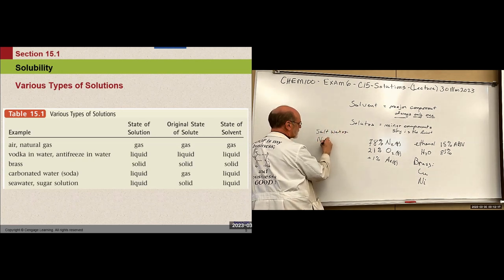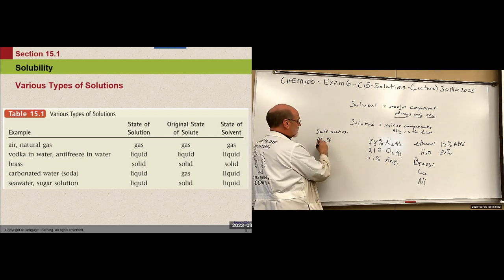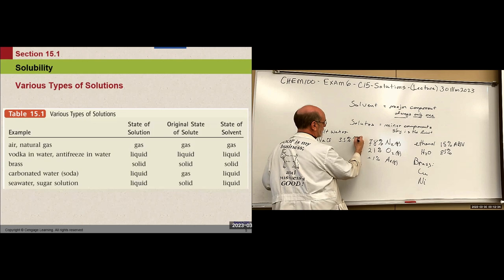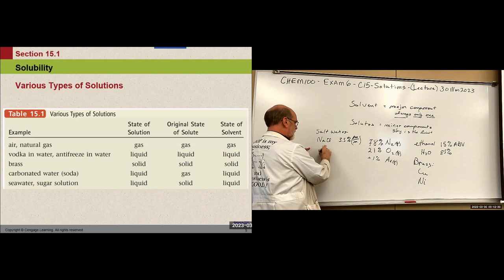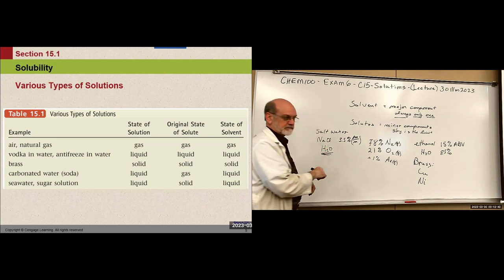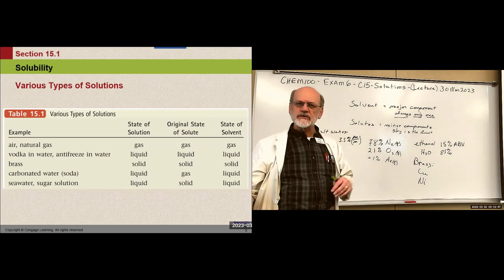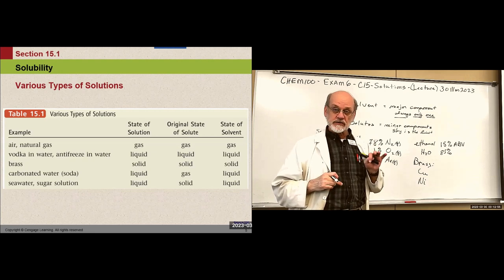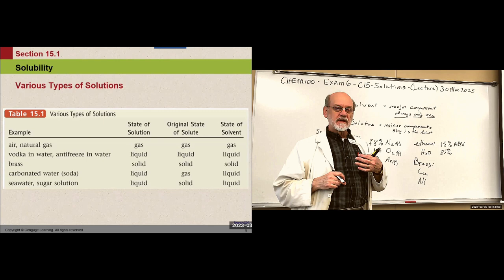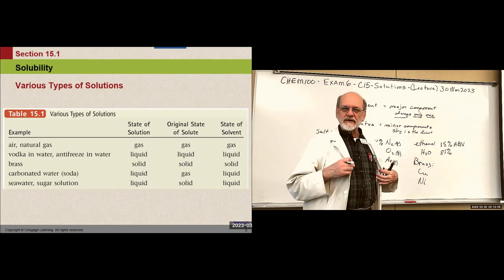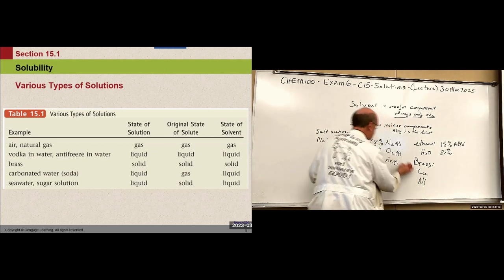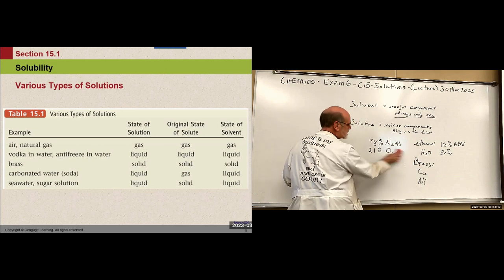In seawater, water is predominantly the solvent. Sodium chloride is the solute, at roughly three and a half percent mass volume, and the major component is water. Sugar solutions: you can put enough sugar into a sugar-water solution that you exceed the amount it will hold, but sugar is considered the solute and the solvent is water. Those are examples of solutions made from different phases of matter.